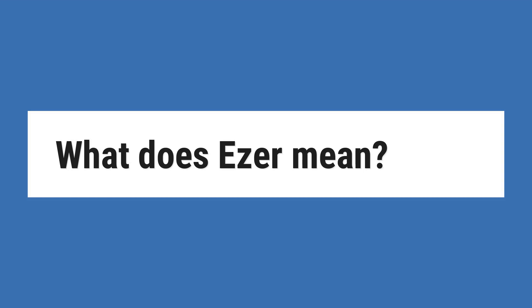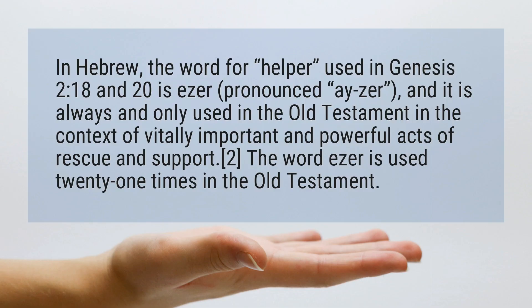What does Ezer mean? In Hebrew, the word for helper used in Genesis chapter 2, verses 18 and 20, is Ezer (pronounced 'ay-zer'), and it is always and only used in the Old Testament in the context of vitally important and powerful acts of rescue and support.